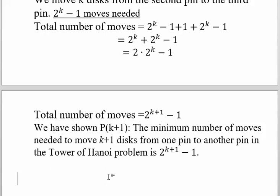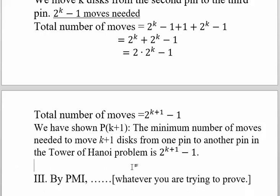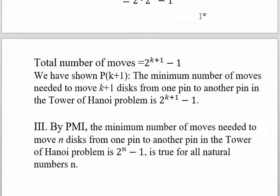Now we have the important housekeeping, the important finishing up. Roman numeral 3, by the principle of mathematical induction, the minimum number of moves needed to move n disks from one pin to another in the Tower of Hanoi problem is 2^n - 1, is true for all natural numbers n.